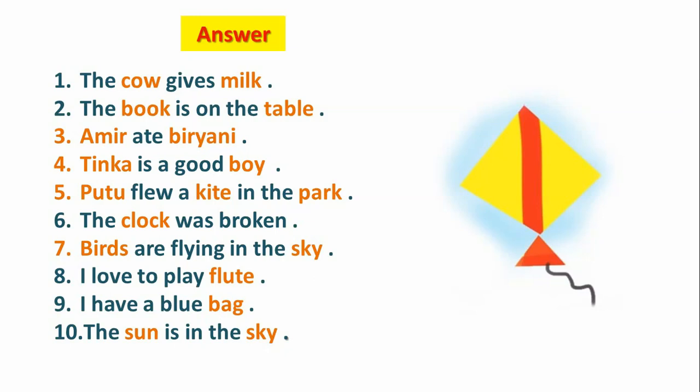Number three: Amir is the name of a person, so Amir is a noun, and biryani is the name of a food, so this is also a noun. Number four: Tinka is a good boy — Tinka and boy are nouns. Number five: Putu flew a kite in the park — Putu, kite, and park are nouns.